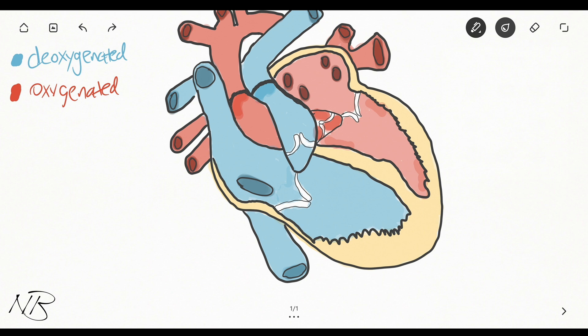The deoxygenated blood returns back to our heart by way of these two apparatuses here. These stand for the superior vena cava and the inferior. And the blood gets deposited where? What is this apparatus? The blood from the superior and inferior vena cava gets deposited directly into the right atrium. So deoxygenated blood comes in from the superior vena cava and from the inferior vena cava like so, both heading directly down toward the right ventricle.